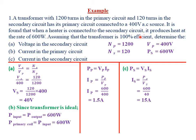We are told the transformer is 100% efficient, which means it is ideal — it has no energy losses. Therefore, power input must be equal to power output. If the transformer were something like 95% efficient, then 5% of energy would be lost and power input would not equal power output. But whenever the transformer is ideal or 100% efficient, power input must equal power output.